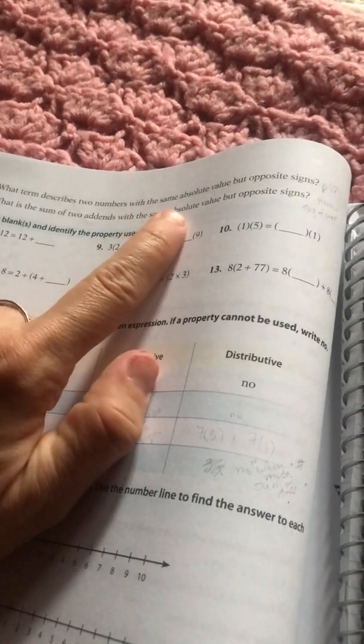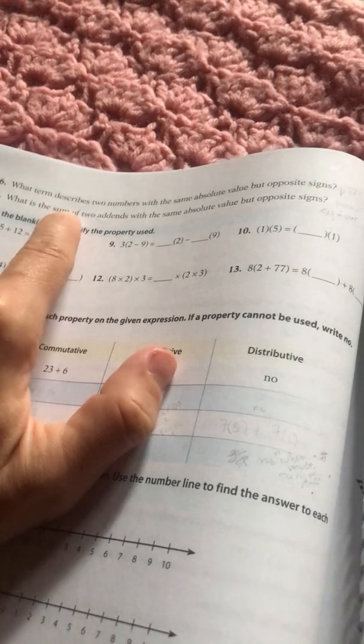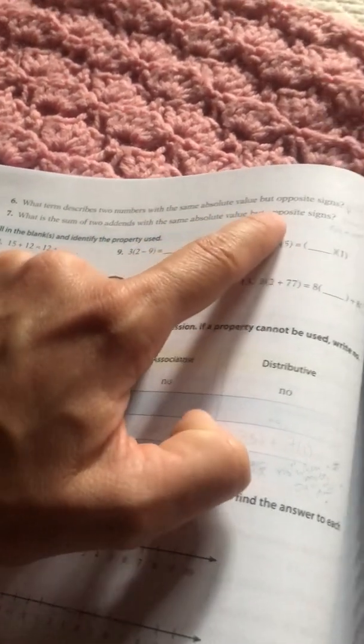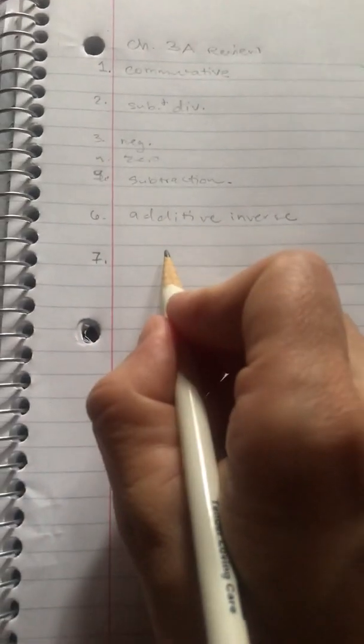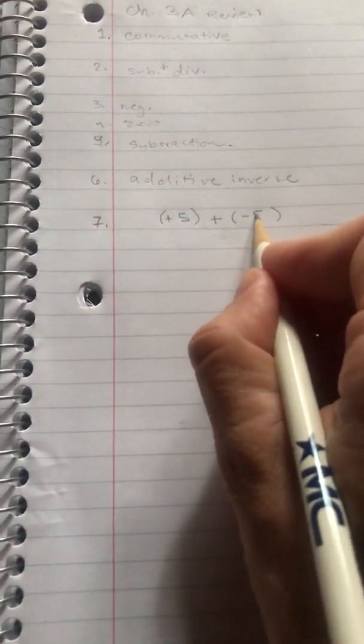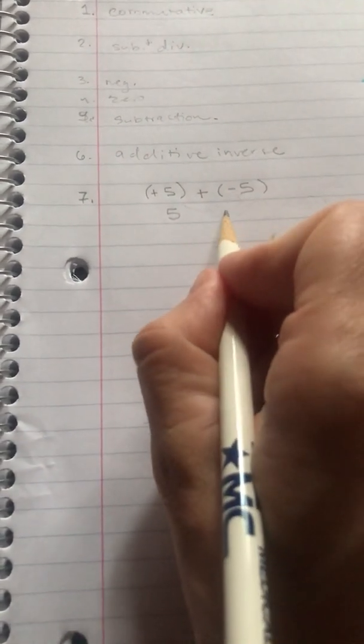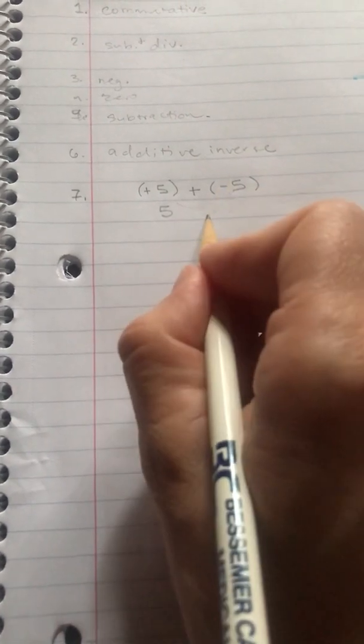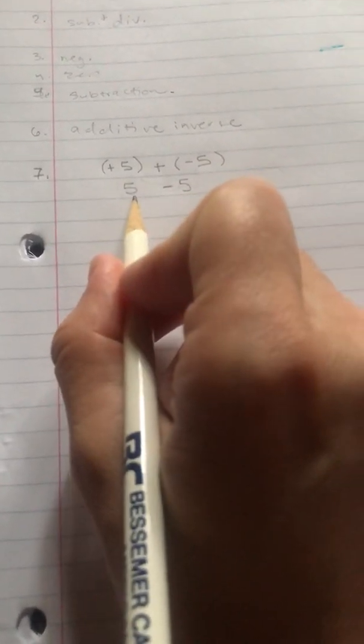The next question, number seven is what is the sum of two add-ins with the same absolute value but opposite signs? So the sum means when you put them together with the same absolute value. Let's use 5 again. Same absolute value. So one's going to be here and it's going to be added to another one. So let's use positive 5 plus negative 5. We want to know what they equal when you put them together. Well, bring this one out. I'm just going to write it plain. And then when I bring this one out, it's going to be negative 5. So you've basically got 5 minus 5. Well, that's zero.